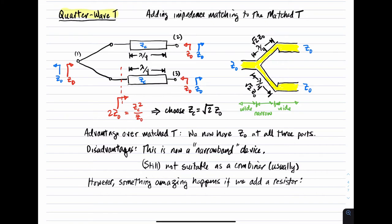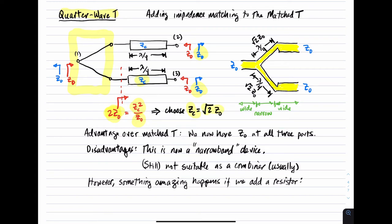Next, the quarter-wave T. The idea is we simply add impedance transformations so that the output impedance can once again be Z₀. This is the matched T with quarter-wave sections that transform 2Z₀ into Z₀. The input impedance looking into a quarter-wave section is the characteristic impedance of that section squared divided by the termination impedance — in this case Z₀. Solving for the characteristic impedance of that transmission line, we get √2 × Z₀. So if we add to each port of the matched T a quarter-wavelength transmission line with characteristic impedance Z_C = √2 × Z₀, then we have everything matched up.